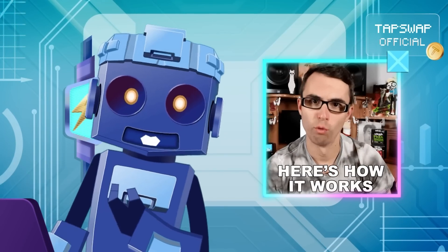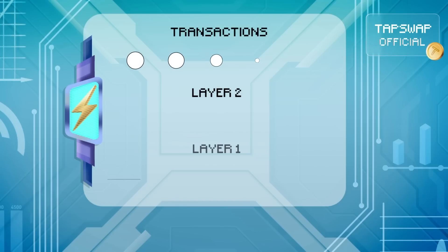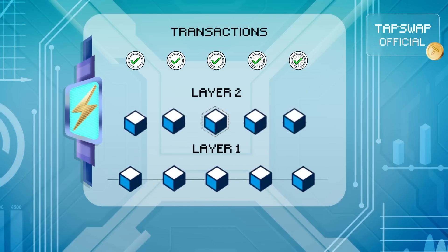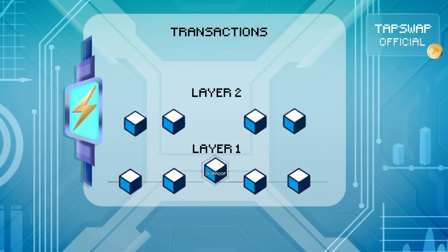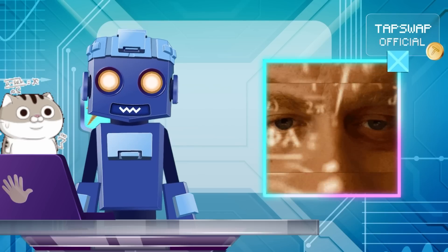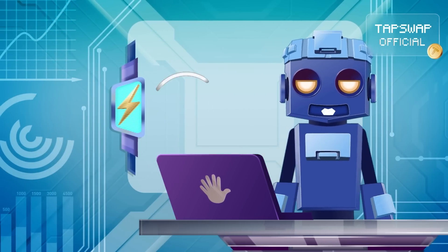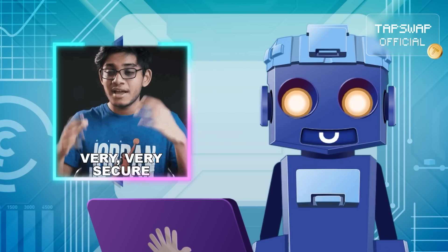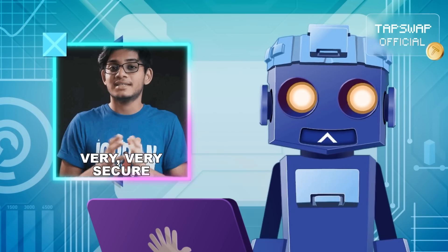Let's decode how ZK Rollups work in general. First, they bundle and process transactions off-chain. The results of these transactions are then condensed into a single batch and sent back to the main blockchain along with a zero-knowledge proof. This proof mathematically verifies that the transactions in the batch were processed correctly, without revealing any sensitive details about the transactions themselves.